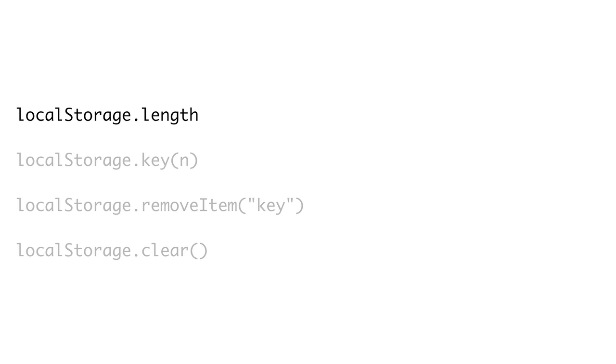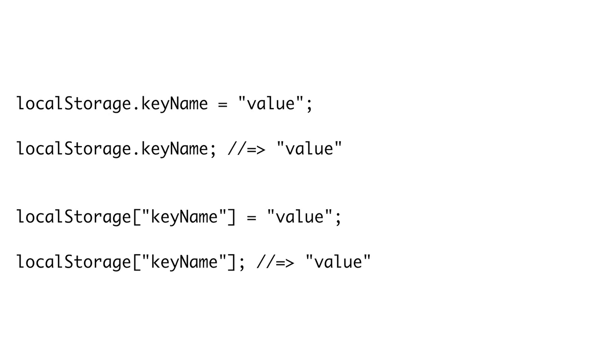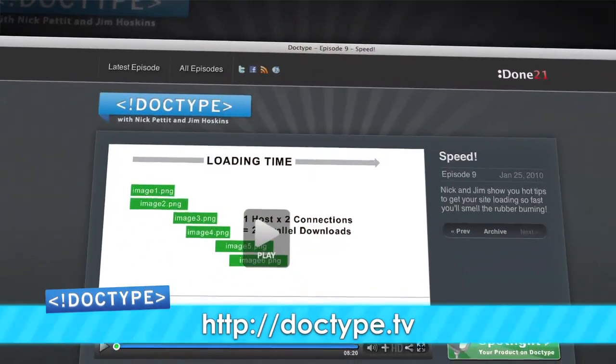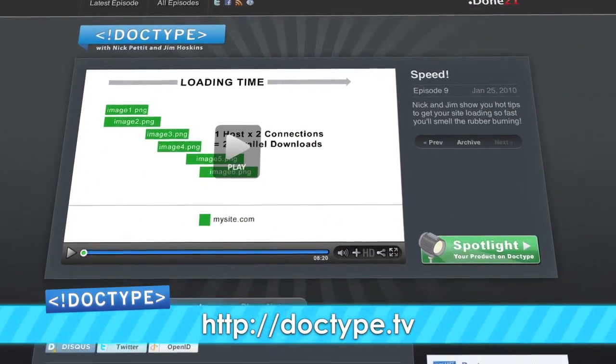Both local storage and session storage have the same storage interface, but session storage clears when the window closes, while local storage persists until the user or software clears it manually. The web storage system is a simple key-value database. To store a value, call localStorage.setItem with the key and value. To retrieve, call localStorage.getItem with the key. Non-string keys or values will have toString called on them, which can lead to confusion. Storage objects also have a length attribute, a key method, a removeItem method, and a clear method. The web database module provides a full SQL database available to JavaScript — there's so much cool stuff that we're giving it its own segment next week. Check out Doctype.tv and subscribe.